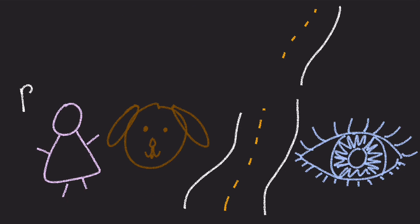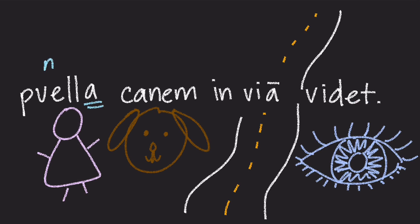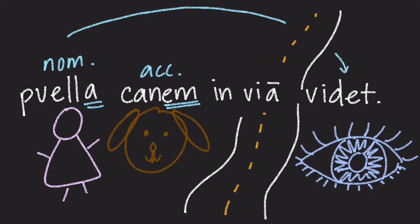Now, what if we had the sentence Puella Kanem in via Widet? We have Puella, our nominative. We have Kanem with that E-N — that's our accusative. We know that because Puella is in the nominative case, she's doing the action, which here is to see: Widet. She is seeing the dog, who is receiving the action because he's in the accusative case. We also have Via, which ends in a long A — that tells us this is an ablative word. One function of the ablative is to tell the place where the action is happening. So this sentence says: the girl sees the dog in the street.